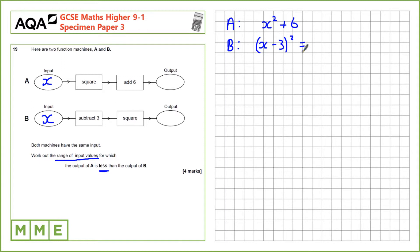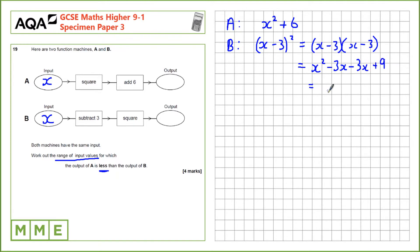Let's expand (X - 3)² quickly to set up the next step. That's (X - 3)(X - 3): X times X is X squared; X times minus 3 is minus 3X; minus 3 times X is another minus 3X; and minus 3 times minus 3 is positive 9. So the output for B is X² - 6X + 9.